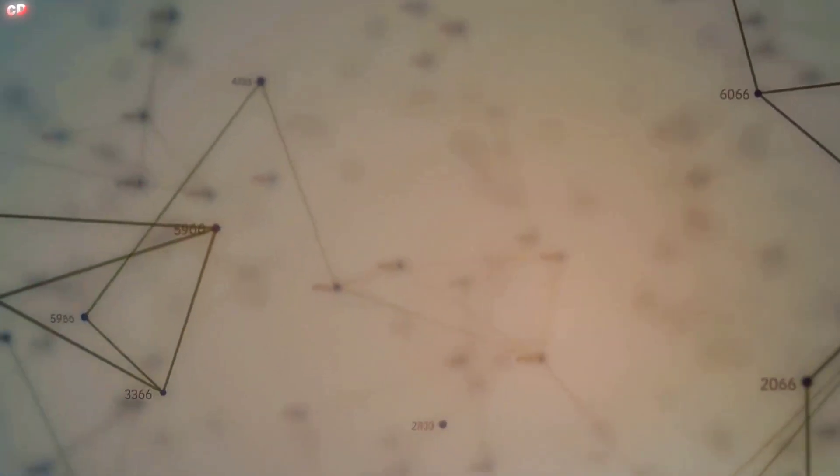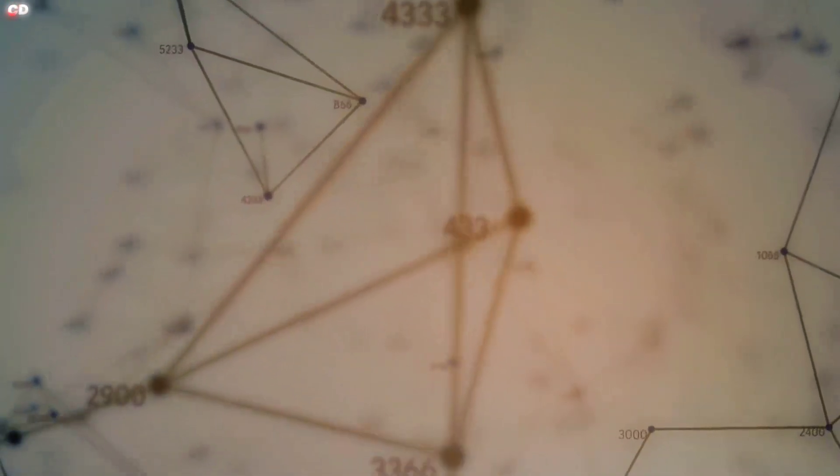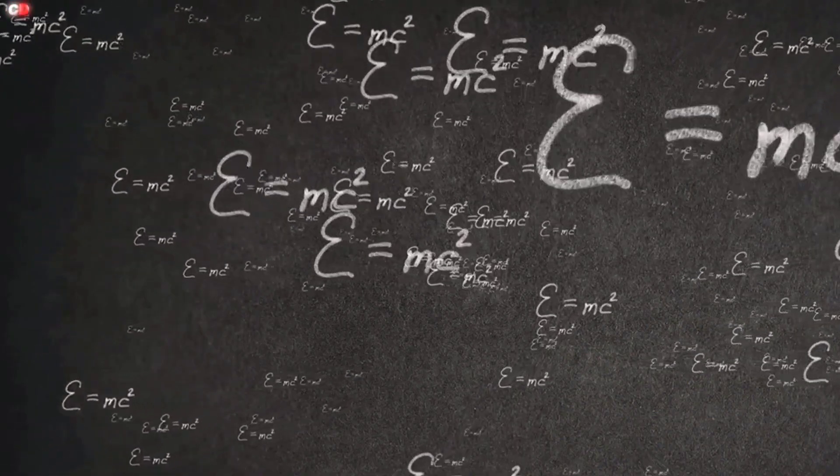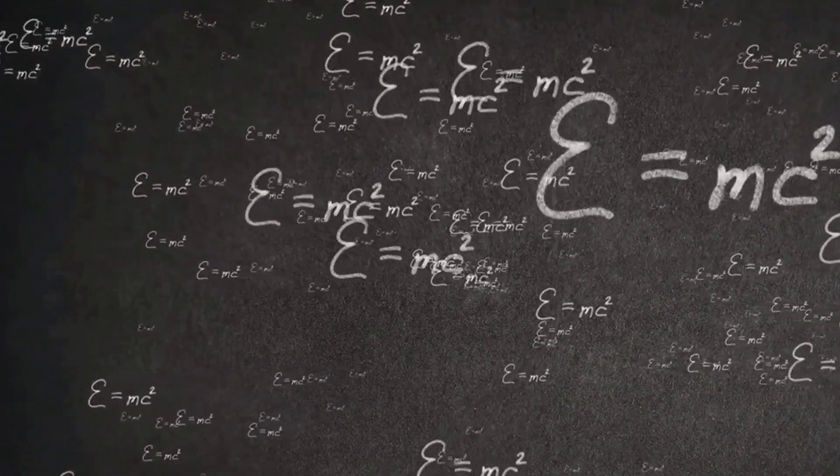Imagine a world where the very fabric of space and time is not smooth and continuous, but rather grainy and discrete, like a digital photograph zoomed in too closely. This is the strange and wonderful world of quantum geometry.